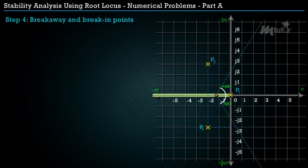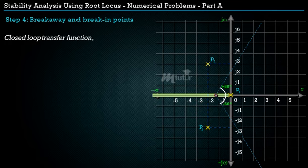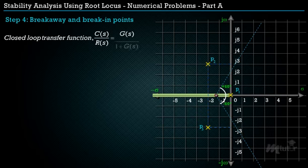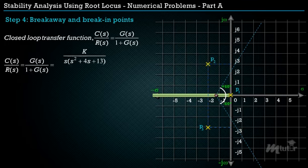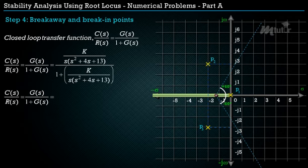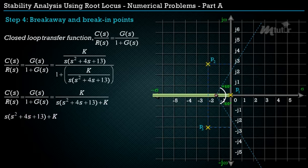Next, find the breakaway and break-in points. The closed-loop transfer function is C(s)/R(s) = G(s) / [1 + G(s)]. Substituting G(s) and simplifying, we get the transfer function and characteristic equation as shown. Taking the s-terms to the right-hand side gives an expression for K.